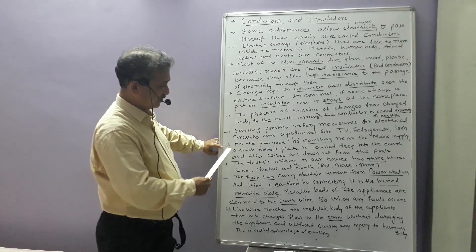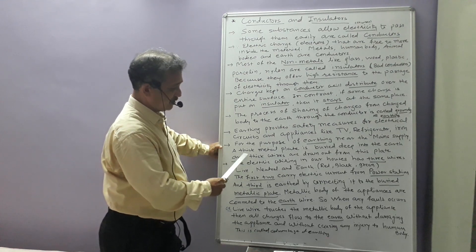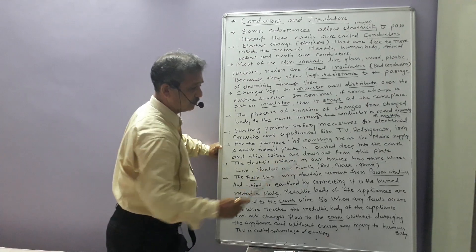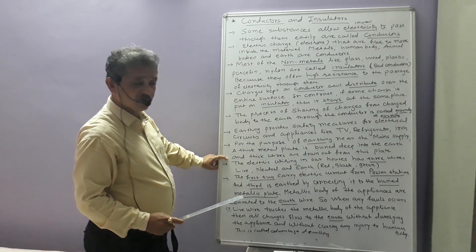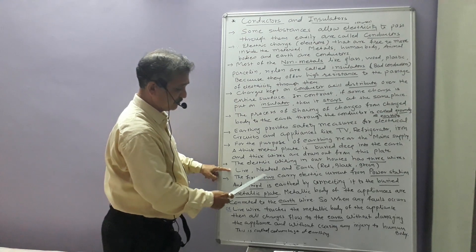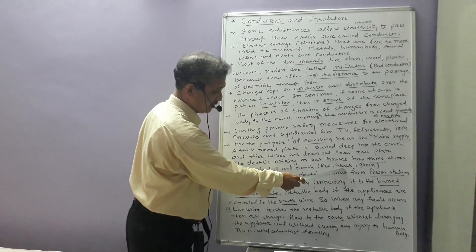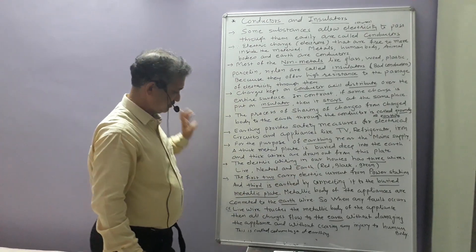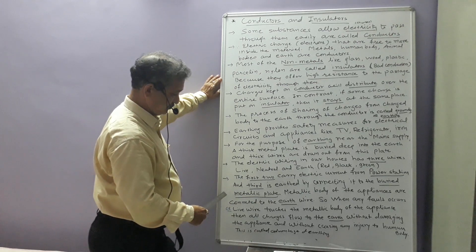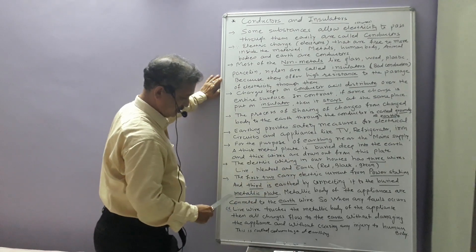For earthing, near the main supply of our houses or buildings, a thick metallic plate is buried deep into the earth and thick wires are drawn from this plate. The electric wiring in our houses has three kinds of wires: live wire, neutral, and earth. The live wire is red in color, neutral is black, and earth is green. The first two wires carry electric current from power stations, and the third wire is always earthed by connecting it to the buried metallic plate.